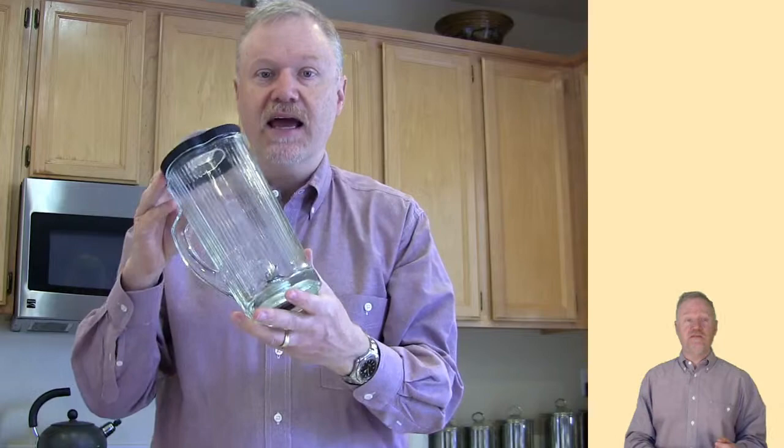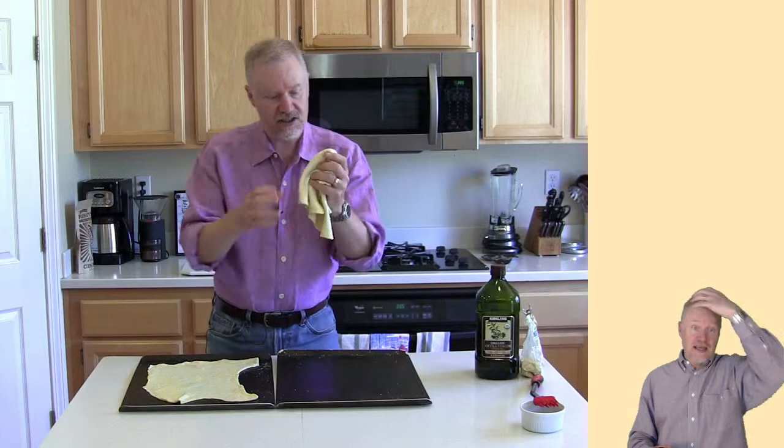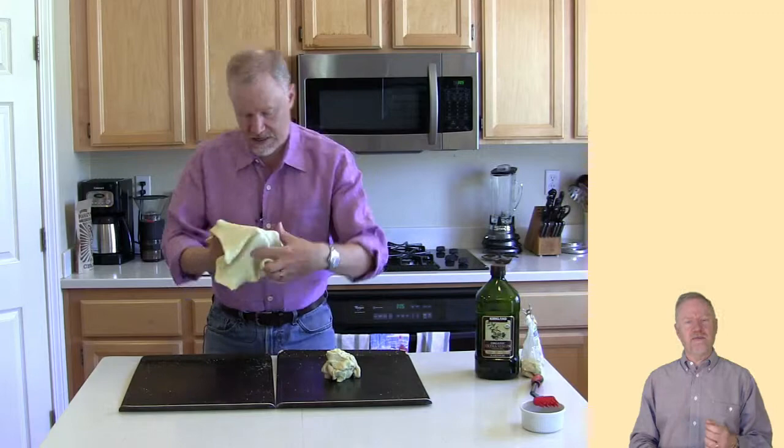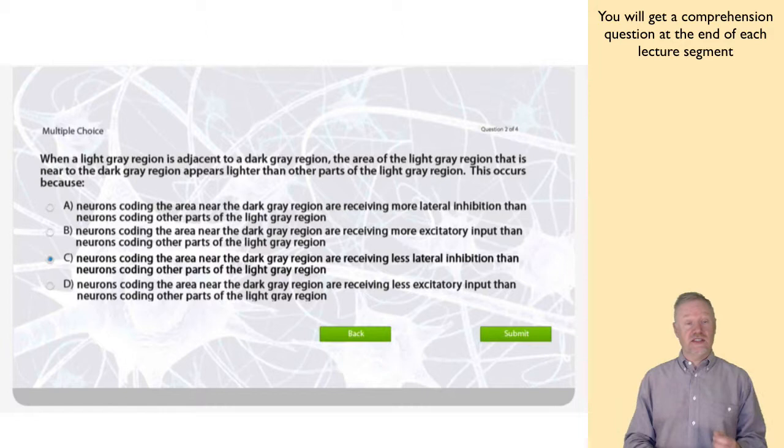For example, when we talk about perception, we'll take a field trip to my kitchen so that we can use real objects like this blender as examples of perception. We'll also spend some time in my kitchen talking about how each hemisphere of the cerebral cortex is like a sheet of pizza dough. Also, the lectures will be divided up into segments of about five minutes, which makes it easier for you to pay attention.